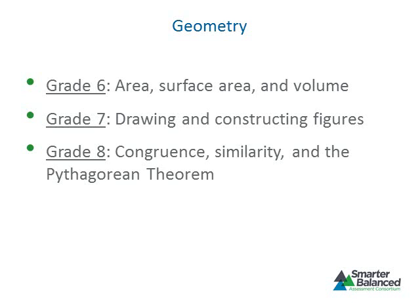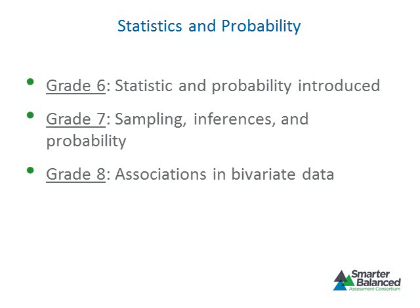Geometry progresses from points on a coordinate plane and classifying two-dimensional figures at grade 5, to area, surface area, and volume at grade 6, continues with applications and adds drawing and constructing figures at grade 7, and extends to congruence and similarity and the Pythagorean theorem at grade 8. The topic of statistics and probability is first introduced at grade 6 and extends to sampling, inferences, and probability at grade 7, and then to associations in bivariate data at grade 8.